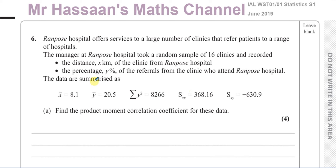The data are summarized as follows. We have x̄ equals 8.1 — that's the average distance of those clinics from the hospital. ȳ is 20.5 — that's the average percentage of the referrals made by the clinics which are for Rampo's Hospital. Then we have the sum of y squared, which is the sum of all the percentages of the referrals squared, equal to 8,266. Then we have Sxx and Sxy.